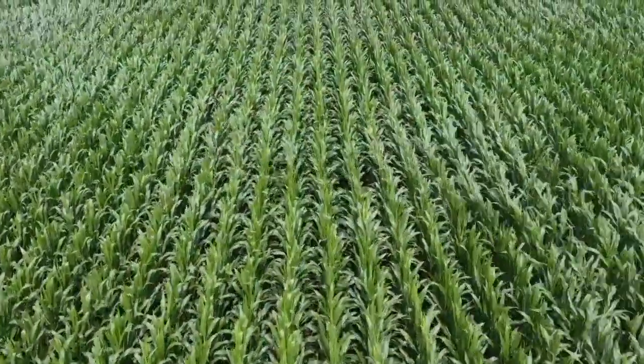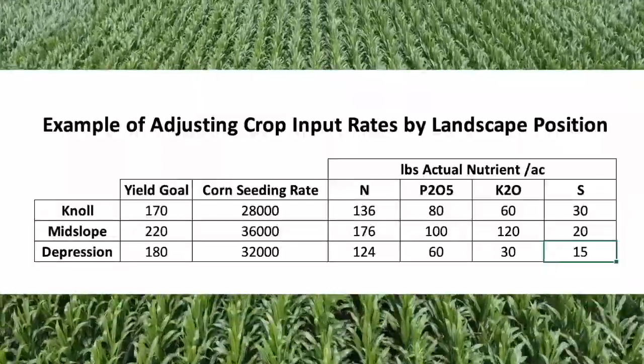Field history — depending on weather conditions, the depressions tend to flood on this property, so sometimes yield potential may be lower, may be higher. Typically nitrogen is not the limiting factor there, so why put extra there? The nulls, regardless of weather conditions because of the soil type — we're on a Perth clay loam here — yield fairly well, but they're very nitrogen responsive, so we tend to crank the nitrogen rates in those spots.